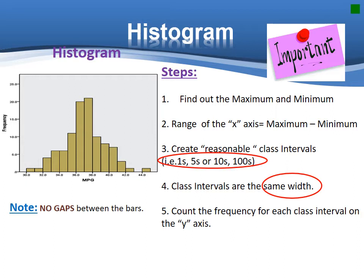Now, I will introduce another graphical method, histograms. Let's see the steps for this. Firstly, find out the maximal and minimal numbers. Then, the range of x-axis will be maximal minus minimal. After that, create reasonable class intervals, usually in 1s, 5s, 10s, or 100s. Note that all the class intervals should be the same size. Lastly, count the frequency for each class interval on the y-axis.